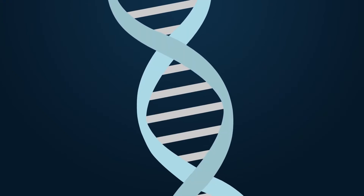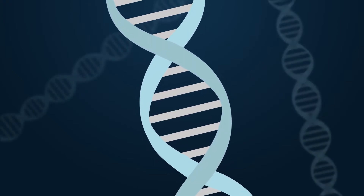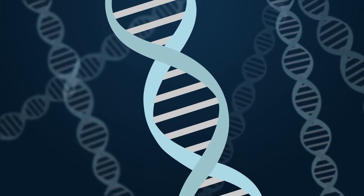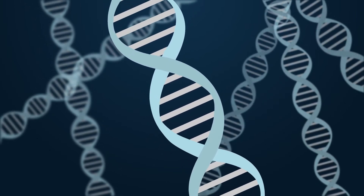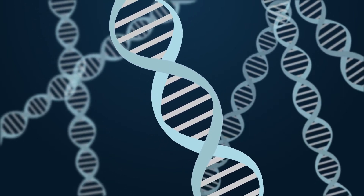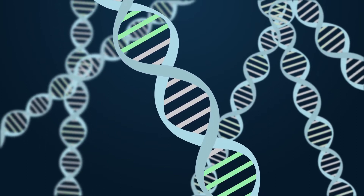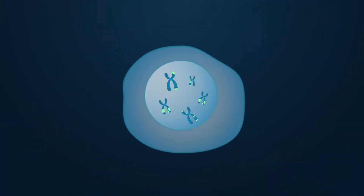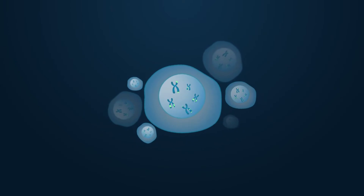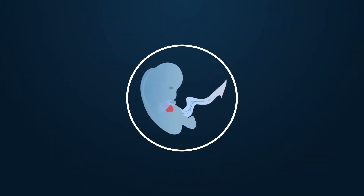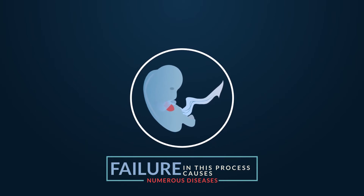The human genome contains 3 billion letters, which are arranged into around 20,000 genes. During embryonic development, genes are constantly being switched on and off in a highly controlled and specific manner to create a complex organism containing millions of cells and many different organs. Failure in this process causes numerous diseases.